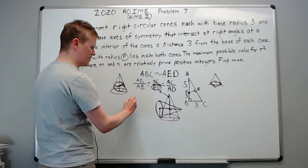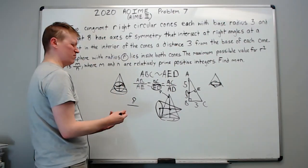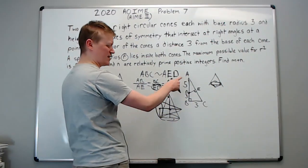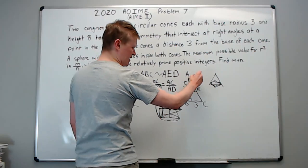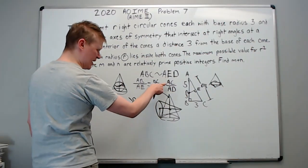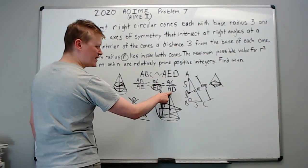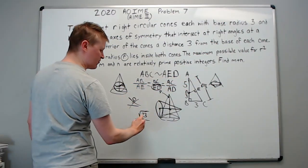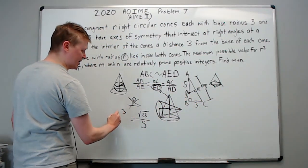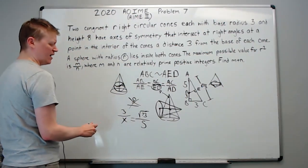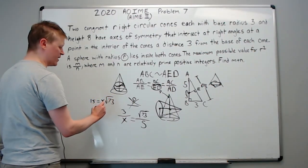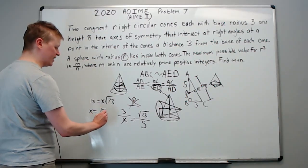AB we already know is 8. AC we can find — if this is 8 and 3, by the Pythagorean theorem, 64 plus 9 is 73, so AC equals root 73. AD comes down here; we've already labeled it as 5. BC is down here and it's 3. That leaves us with ED, which we're going to call X. Cross-multiplying, we get BC over ED equals AC over AD, so 3 over X equals root 73 over 5. Cross-multiplying: 15 equals X times root 73. So X equals 15 over root 73.